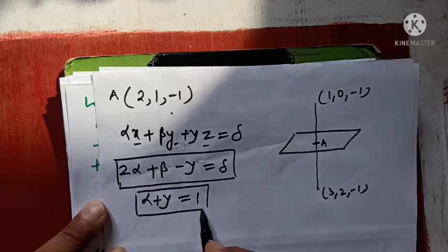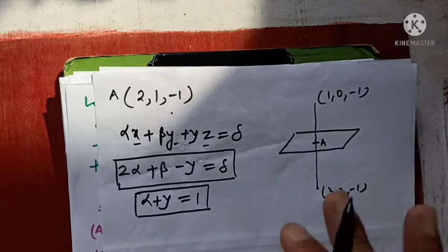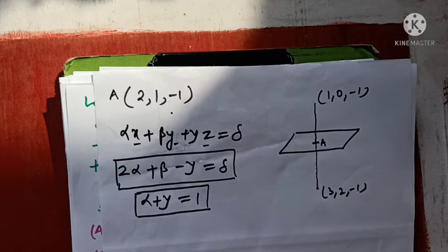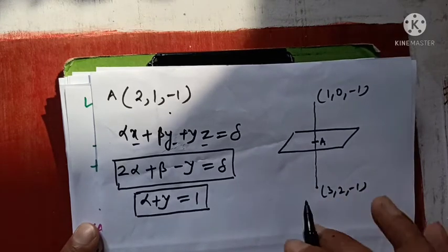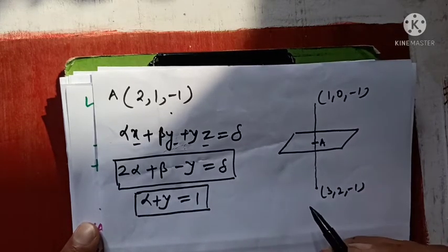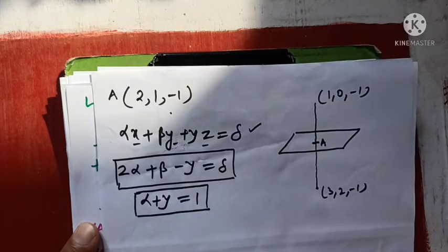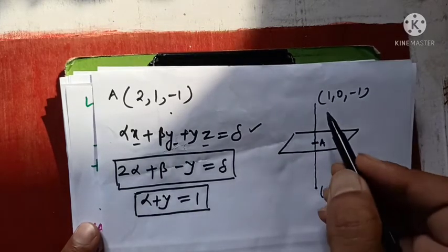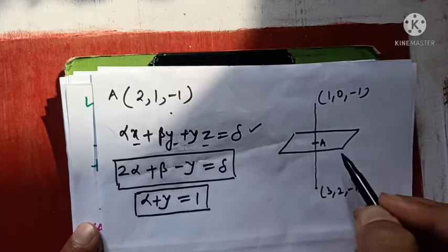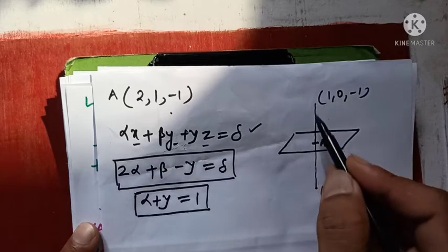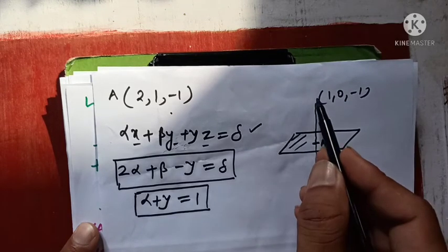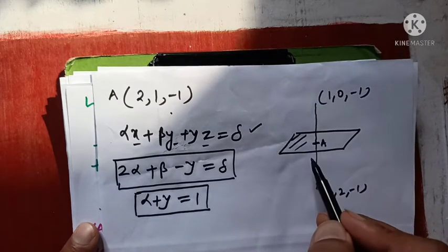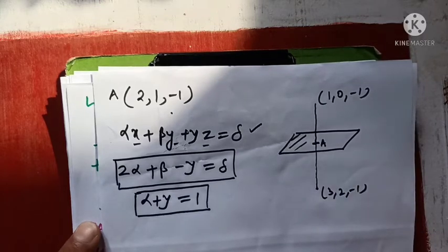We need one more condition. Notice that for any plane, you can find its direction cosines in two ways: first, directly from the plane's equation coefficients, and second, through the line perpendicular to it — its normal. We have both the plane's equation and its normal given, so we will derive direction cosines through both methods and equate them, since both must be equal.